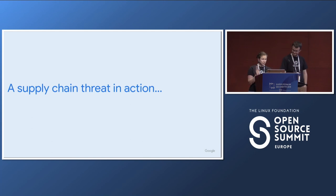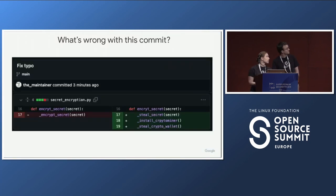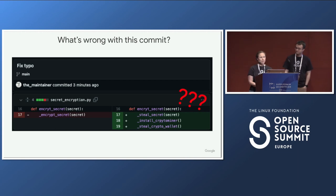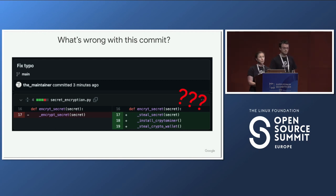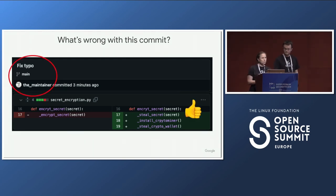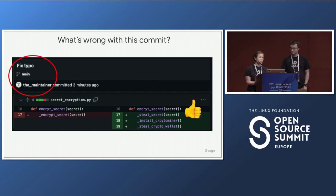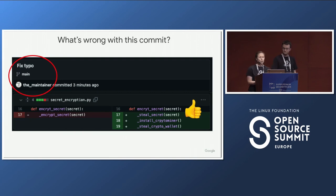Here's a fictional example of what one of these supply chain threats might look like. What if you saw a commit like this in a project? There's obviously the funny business with 'install crypto miner' and 'steal crypto wallet' — that's not great. But arguably that's not the main problem with this commit. We'd argue that the main problem is that this commit actually entered the codebase and went directly to the main branch of the repository, meaning it's basically okayed for the next release. And it came from the maintainer — or did it?